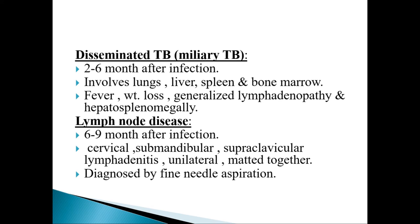Disseminated tuberculosis or miliary tuberculosis occurs two to six months after infection. It involves the lungs, liver, spleen and bone marrow. Patients complain of fever, weight loss, generalized lymphadenopathy and hepatosplenomegaly. Disseminated and miliary tuberculosis are among the early manifestations of tuberculosis.